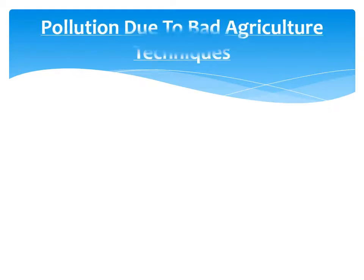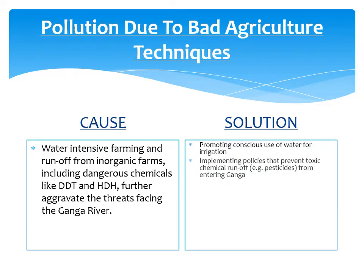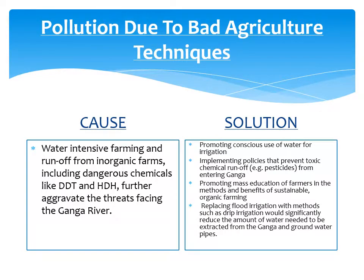Pollution due to bad agriculture techniques: Water-intensive farming and runoff from inorganic farms, including dangerous chemicals like DDT and HCH, further aggravate the threats facing the Ganga river. Solution: Promoting conscious use of water for irrigation and implementing policies that prevent toxic chemical runoff from entering Ganga. Replacing flood irrigation with methods such as drip irrigation would significantly reduce the amount of water extracted from Ganga and groundwater.